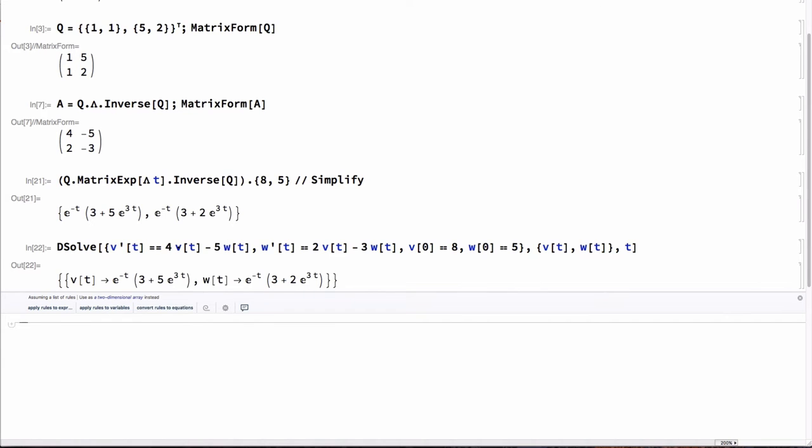We'll get rid of this and do one more thing for verification purposes. We had that A, we showed that A is equal to Q lambda Q inverse, right?